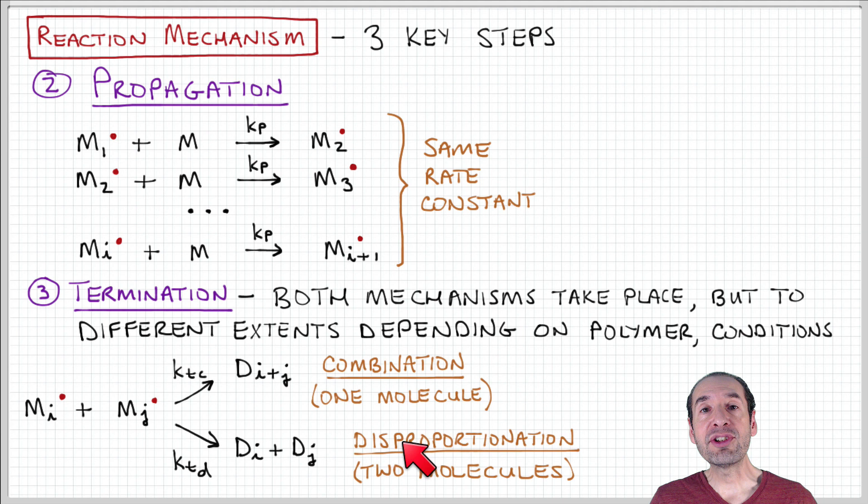Another way that this radical group can be transferred away is by combination of two growing chains together. This is called combination termination. So here, a chain of length I that's active and an active chain of length J join together or combine and lose their radical group to form a chain, a dead chain of length I plus J.